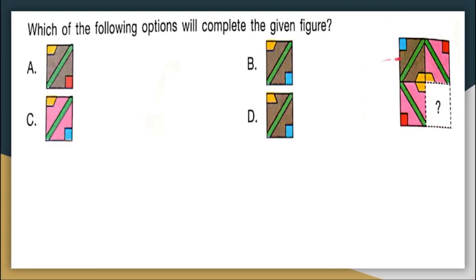This is your given figure and you have 4 options. You have to find out which of the options will complete the given figure. Very clearly you can see that the rectangle on this side is pink, this is also pink. So this has to be brown and the rectangle that comes here should also be brown. Very clearly you can eliminate option C — it is pink in colour, and definitely pink colour cannot come there. The rectangle that has to come in the missing place is a brown rectangle.